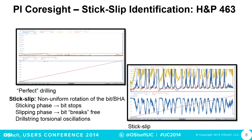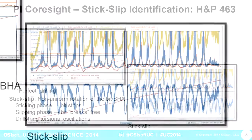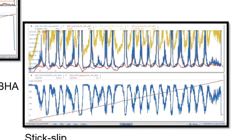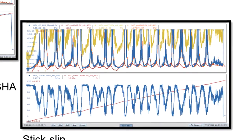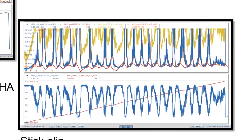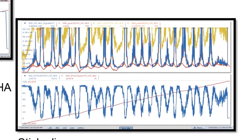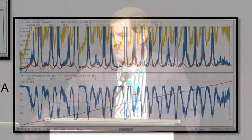This is rate of penetration — the blue line in Coresight on the bottom. As you can see, that's really cycling a lot. Your rate of penetration is going down to like zero feet per hour. We're able to identify that better using Coresight.